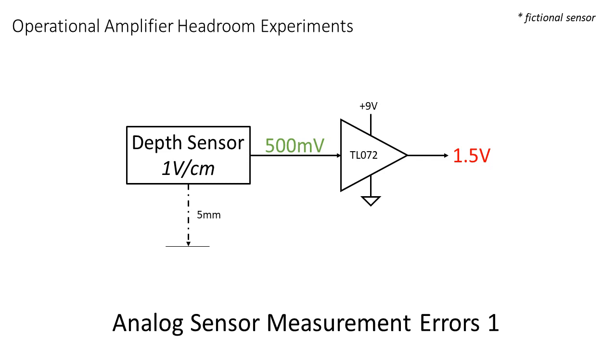For example, a fictional depth meter that has a 1 volt per centimeter output. The sensor gives us a perfect value of 500 millivolts. But the op-amp buffer cannot process this value because it is too low. In return, we get the wrong value of the lower limit of the op-amp output swing.